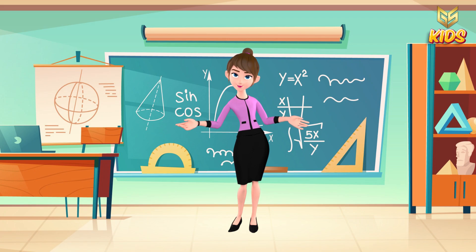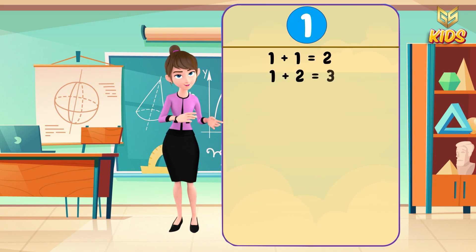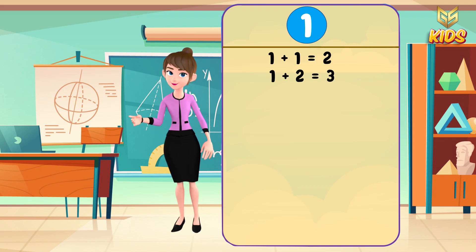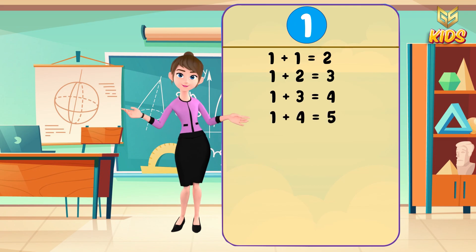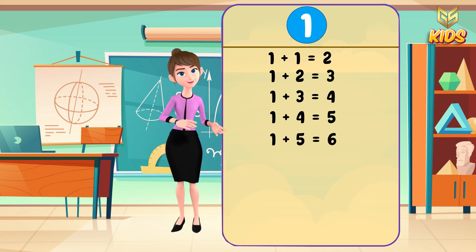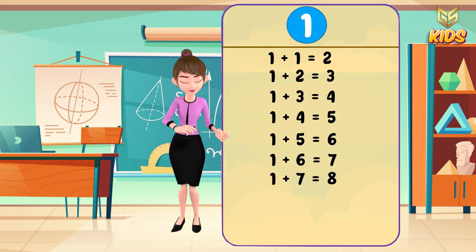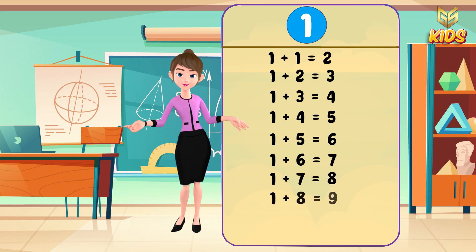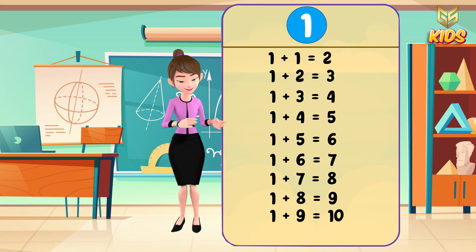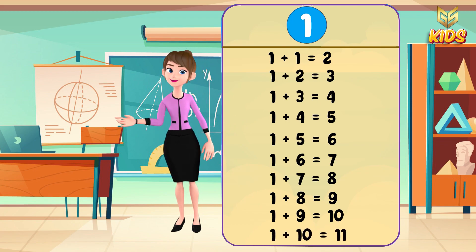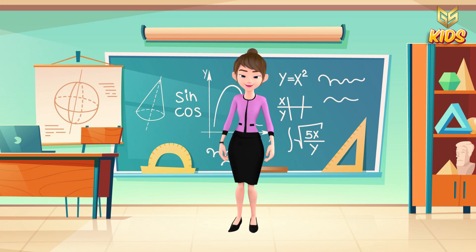One plus nine is equal to ten, and one plus ten is equal to eleven. I hope you have understood table number one. Let's repeat it again: one plus one is equal to two, through one plus ten is equal to eleven. I hope you have easily remembered the addition table number one.